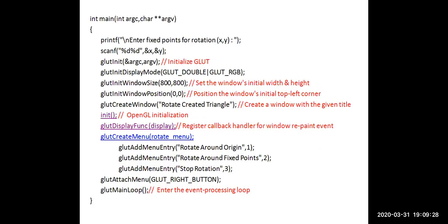In the main function, printf is used to prompt the user to enter the fixed point for rotation. Using scanf, we read the user's input x and y coordinate values. glut_init initializes GLUT, glut_init_display_mode sets double buffered and RGBA color mode, glut_init_window_size sets the window size to 800x800, and glut_init_window_position sets the default position to the top-left corner at (0,0). glut_create_window creates a window titled 'rotate created triangle'.